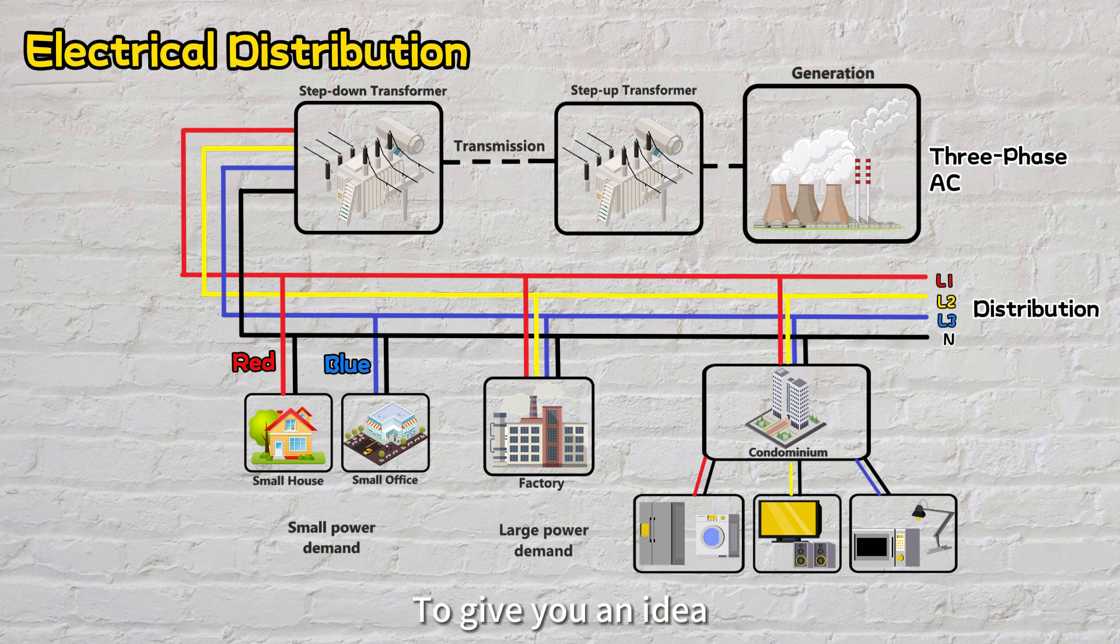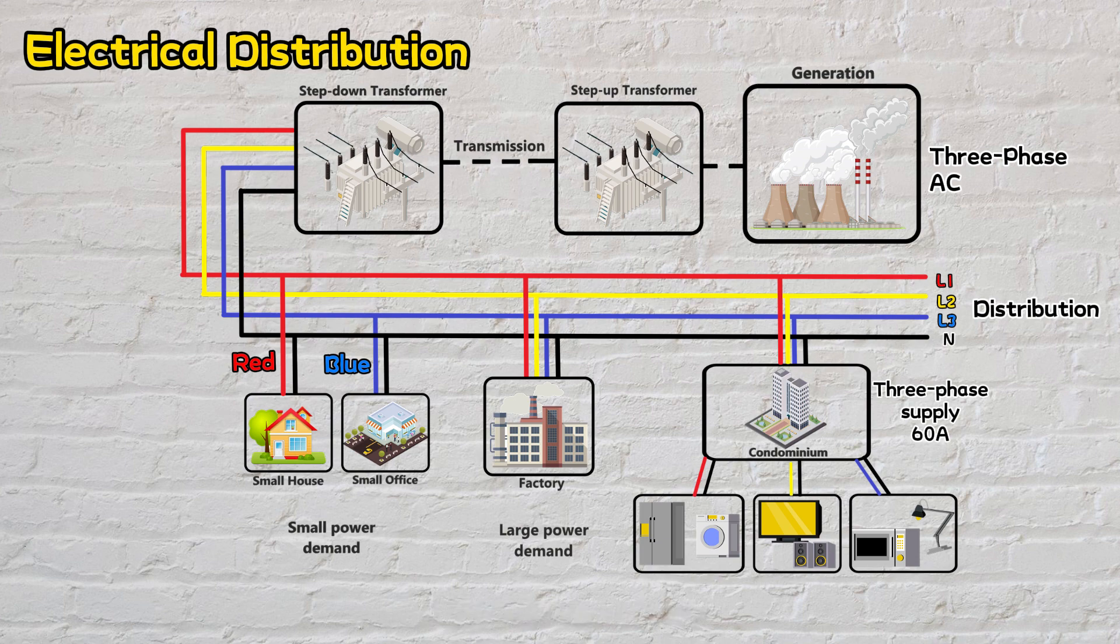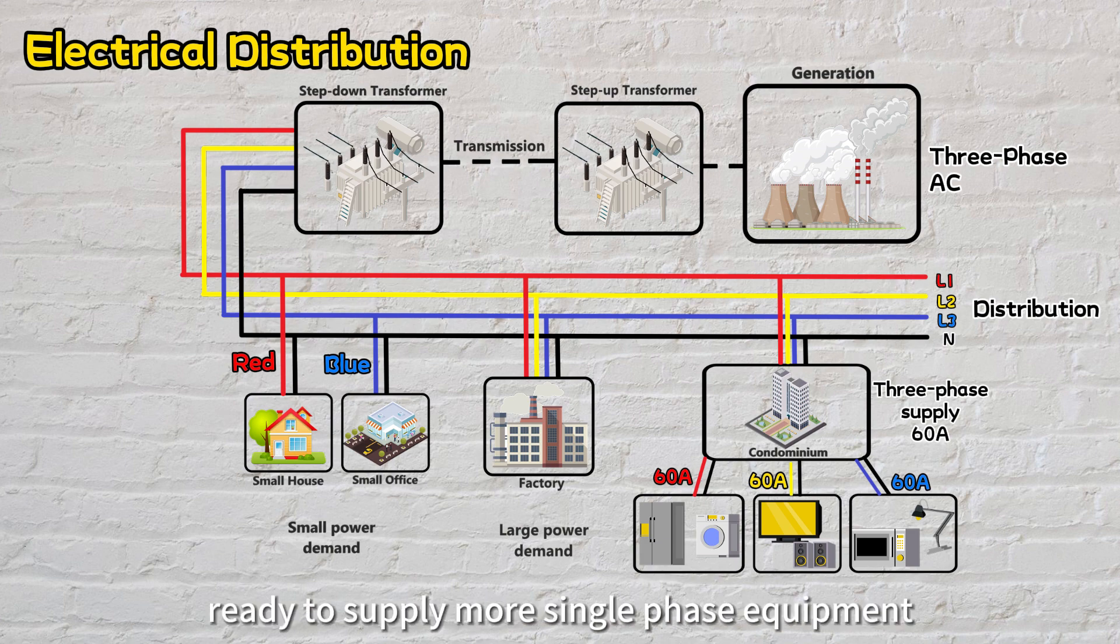To give you an idea, imagine you have a 60 amp three-phase supply. That's three times the power capacity of a 60 amp single-phase. It's like having three powerful streams of electricity, each delivering up to 60 amps, ready to supply more single-phase equipment.